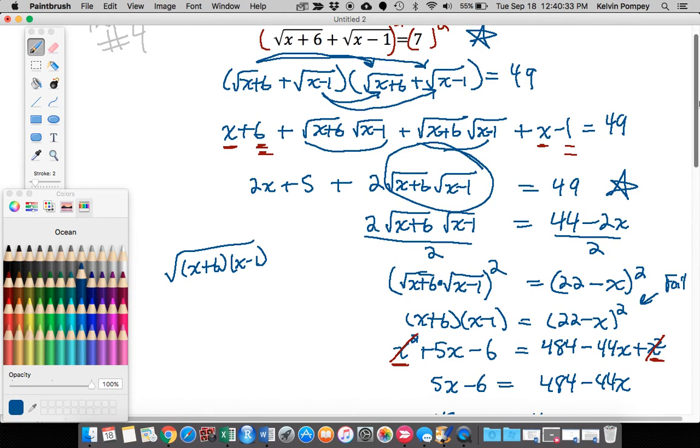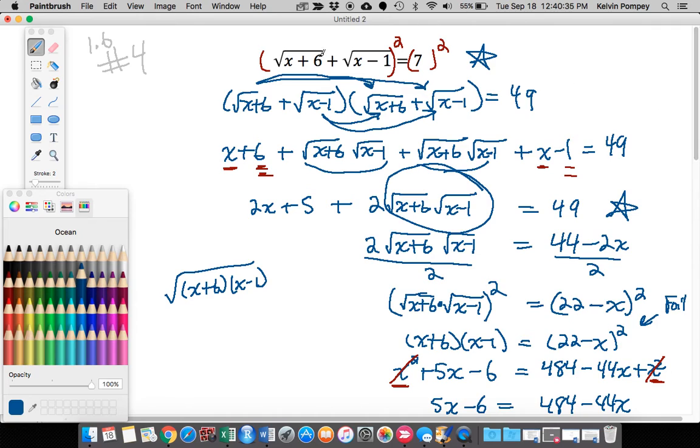So what we need to do is go back to our original equation and plug in our value that we got. I'll plug in 10 here and 10 here and see if I got an appropriate solution. When I plug in 10 here I get square root of 16 which is 4. When I plug in 10 here I get square root of 9 which is 3, and 4 plus 3 does equal 7. So my solution is x equals 10.